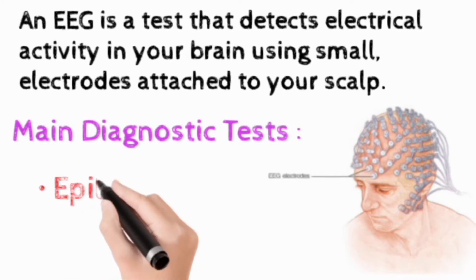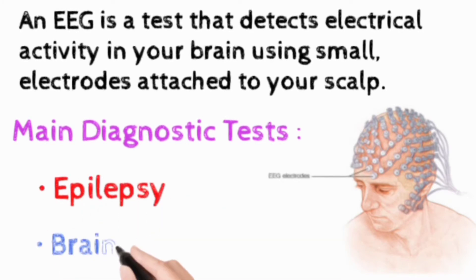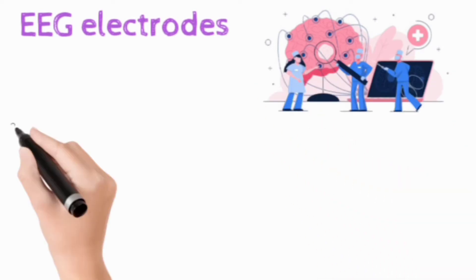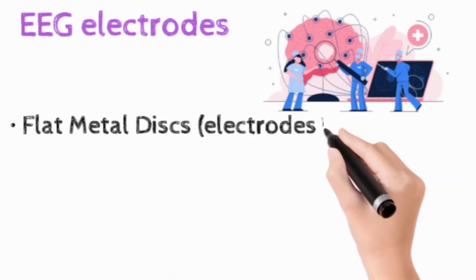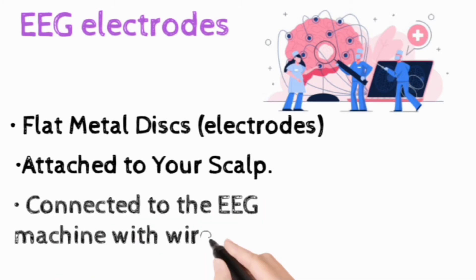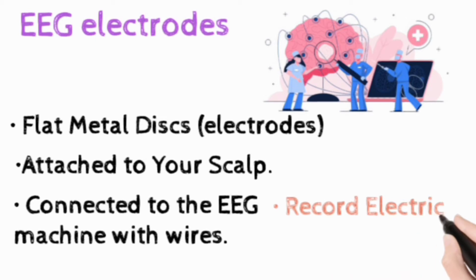EEG is a main diagnostic test for epilepsy and various brain disorders. Now let's move towards EEG electrodes. Electrodes are the metal discs attached to your scalp and connected to EEG machine with wires.